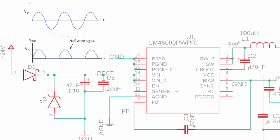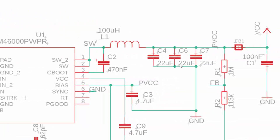I also have a zener diode — a 60-volt zener — so if someone applies too much voltage, it turns on and helps protect the chip. For my input caps, I always size capacitors at much higher voltage levels with a lot of margin, because caps in power supplies tend to be the most unreliable component. I believe they're rated close to 100 volts — lots of margin so they don't break.